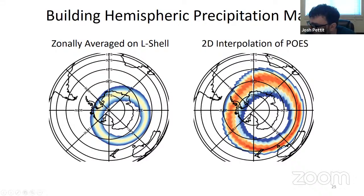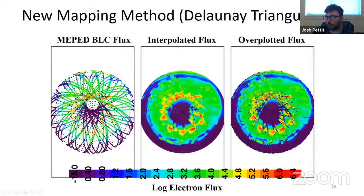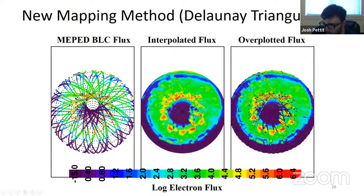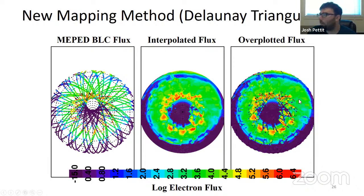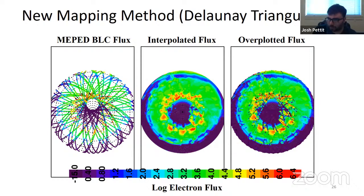We've tried 2D interpolations using POES, but we've actually settled on a better method using Delaunay triangulation. What's shown on the left is the MEPED bounce loss cone flux — the paths of different MEPED instruments for one single day. To make a map out of it, we used Delaunay triangulation, shown in the middle. To test how well this works, we over-plotted the left-hand plot onto the middle plot in hopes it would disappear, showing how well the fit is working. We think it's doing a pretty good job, and most importantly it captures features that a zonal average would not. For example, chorus waves tend to precipitate electrons between 6 and 12 MLT, and this can capture that better than a zonal average over an L-shell.